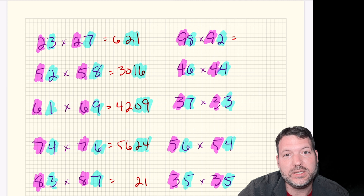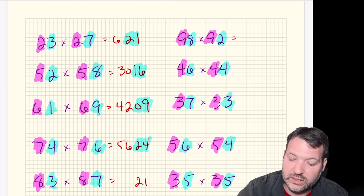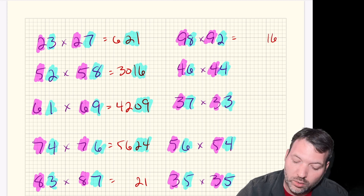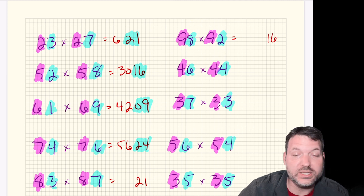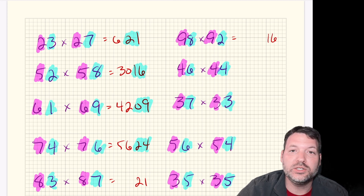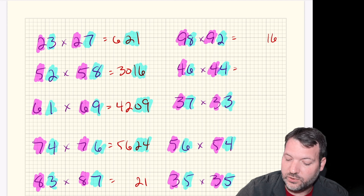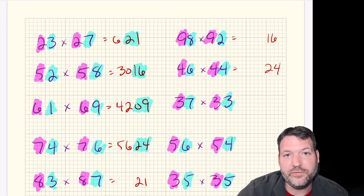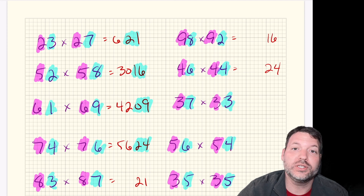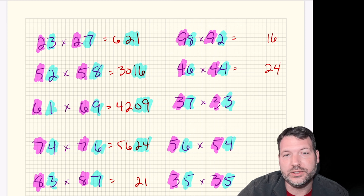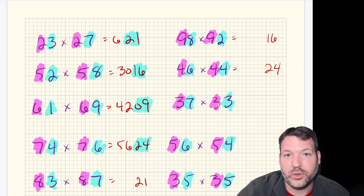For 98 times 92, the ones digits are 8 and 2 — 8 times 2 is 16, so it ends in 16. For 46 times 44, the ones digits are 6 and 4 — 6 times 4 is 24, so the last two digits are 24. The last two digits of the product are simply the product of the two ones digits that add up to 10. We'll see why in a bit.